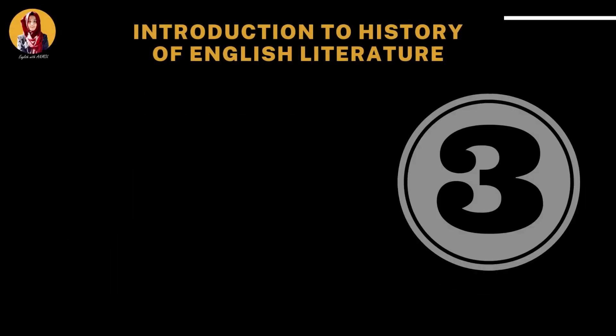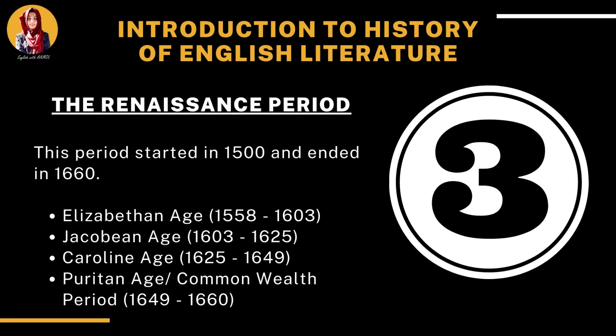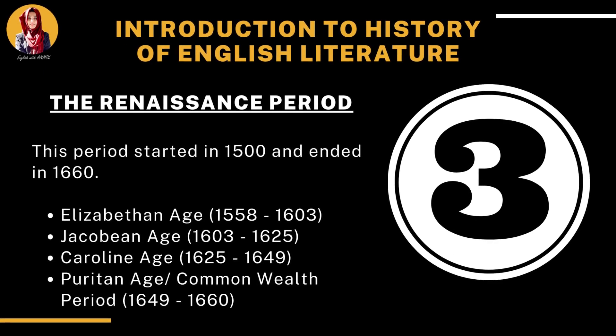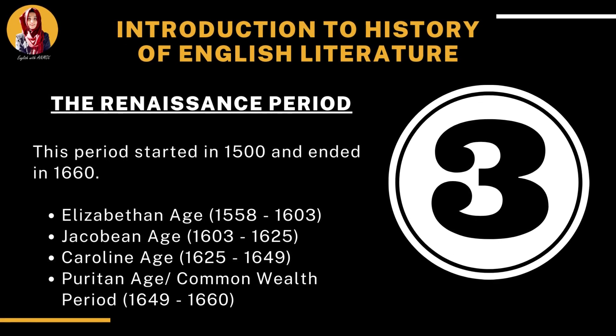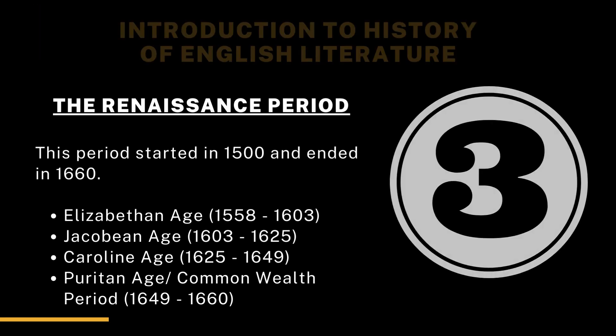The third period is called the Renaissance period. This period started in 1500 and ended in 1660. This period is further divided into the Elizabethan age, Jacobean age, Caroline age, and the Puritan age or Commonwealth.